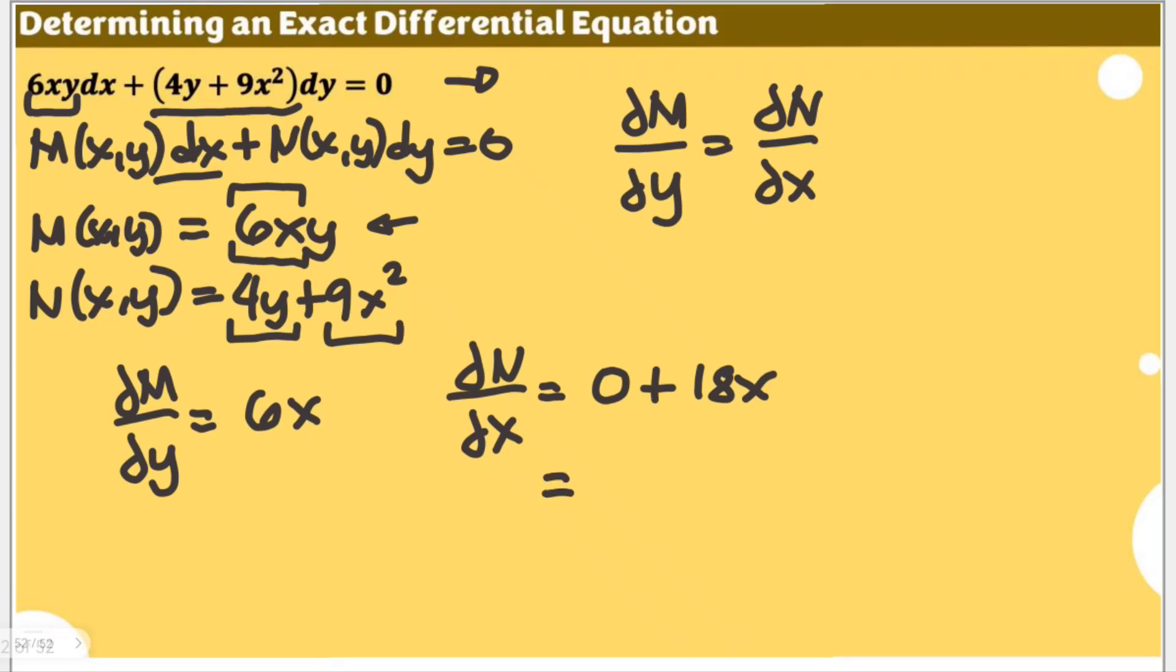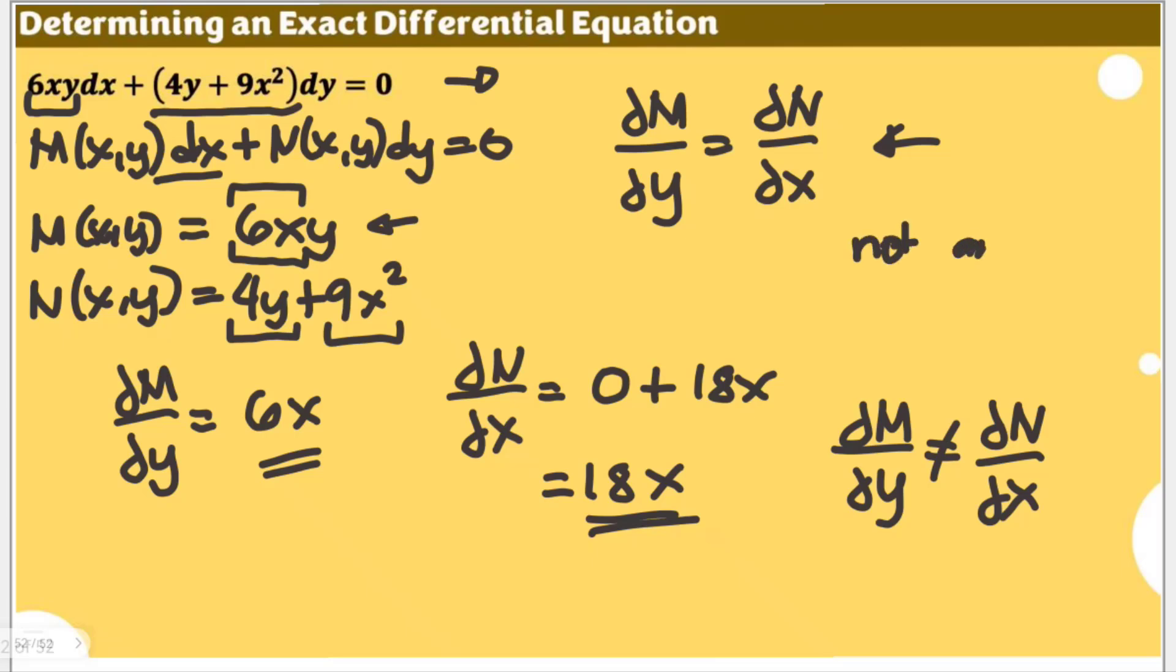Now we are sure, based on our computation, that the partial derivative of M with respect to y is not equal to the partial derivative of N with respect to x, because 6x is not equal to 18x. This was not established, and therefore, we can say that our differential equation given here is not an exact differential equation.